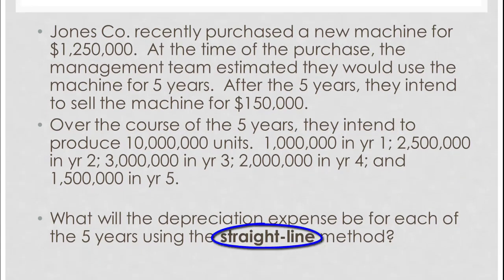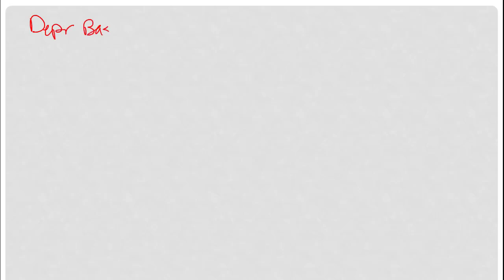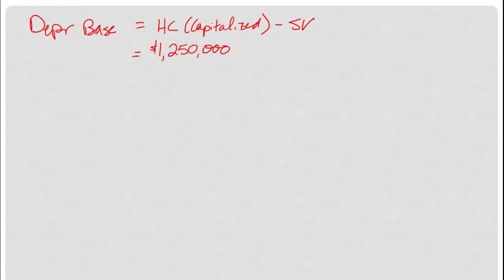We want to start with straight-line depreciation — how much would we recognize as depreciation expense each year? The first step to just about every depreciation method is to calculate the depreciation base, which we define as the historical cost, or the amount capitalized, minus the salvage value. In this case, the historical cost was $1,250,000 and the salvage value is $150,000, so the amount we want to depreciate over the five years is $1,100,000.